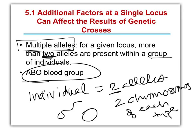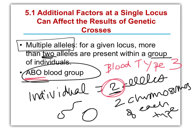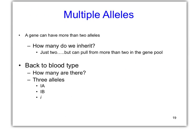A really nice example is blood type. For blood type, there are actually three alleles out there. Each one of us can only have two, but there are three out in our gene pool. So what does this mean? A gene itself can have more than two alleles, but an individual can't — two only.